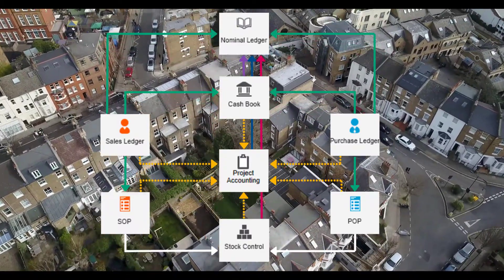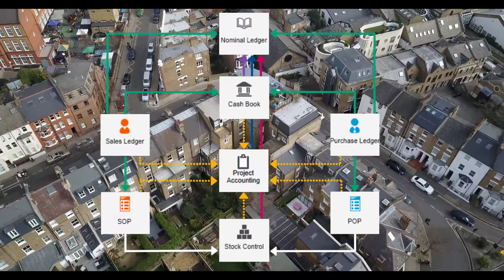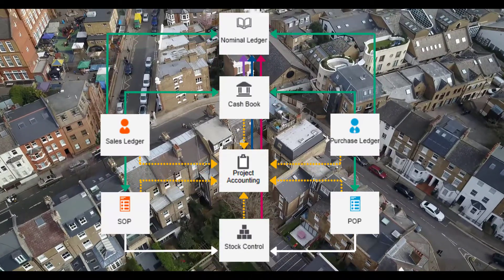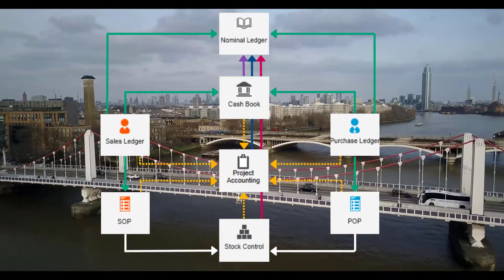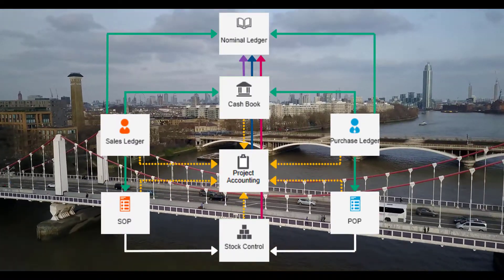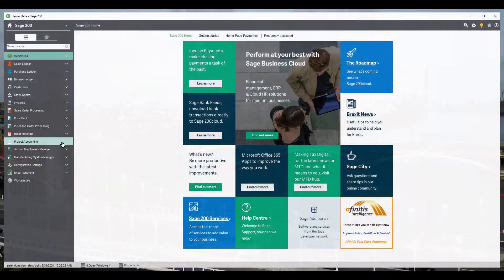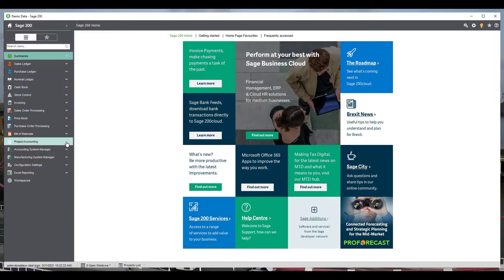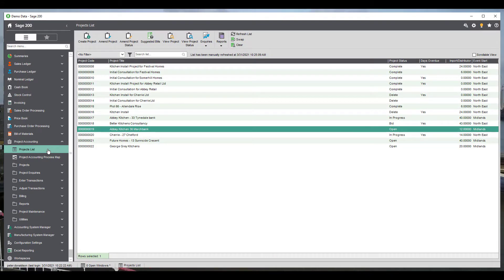When this method is used, you would have to manually attach the customer to the project first before the project code will be available for selection during the order or quotation entry. Available to use in Sage 200 Cloud Professional, the project accounting module can be found on the left side menu, as long as you have a license for it.